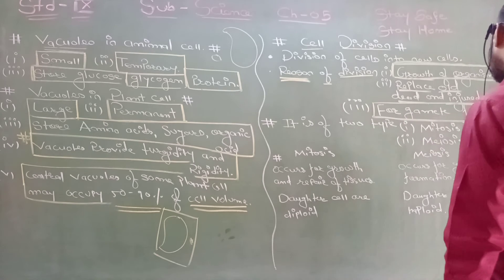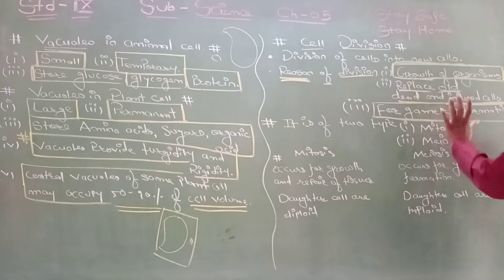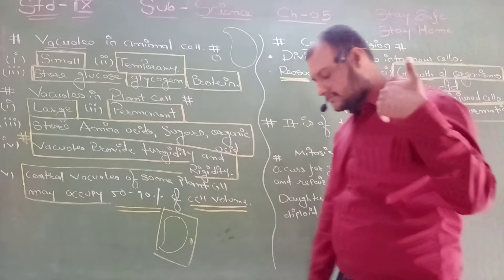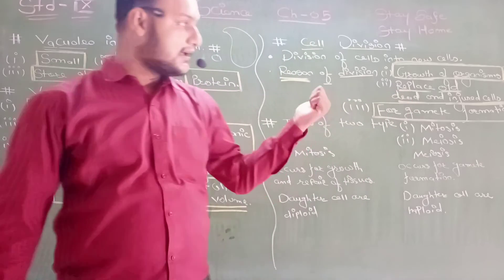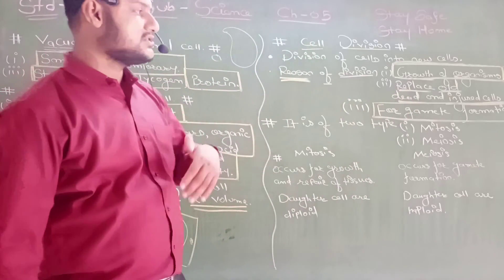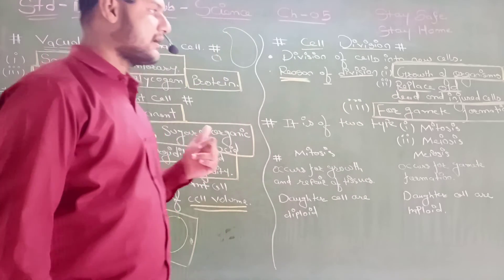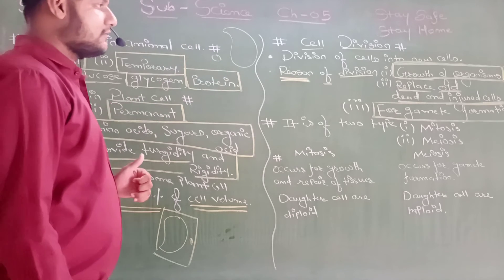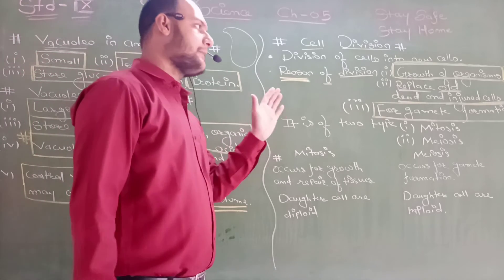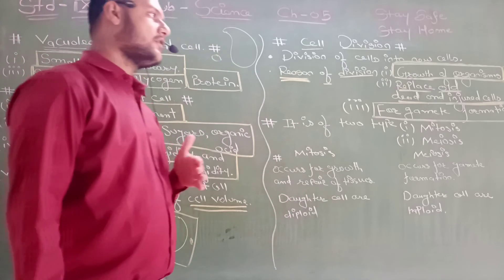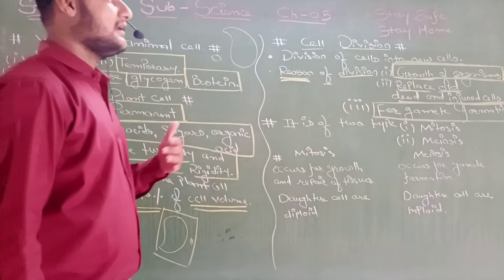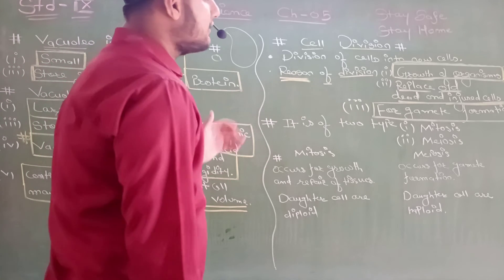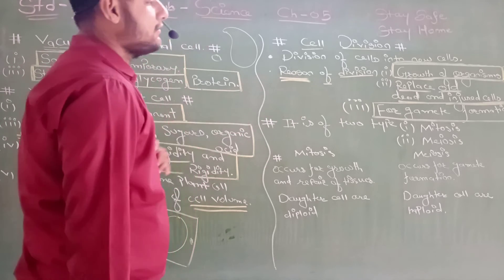For gamete formation, remember this for now. When we study 10th standard, we will learn gamete formation in detail. So the three reasons for cell division are: first, growth of organism; second, replace old, dead, and injured cells; third, for gamete formation.